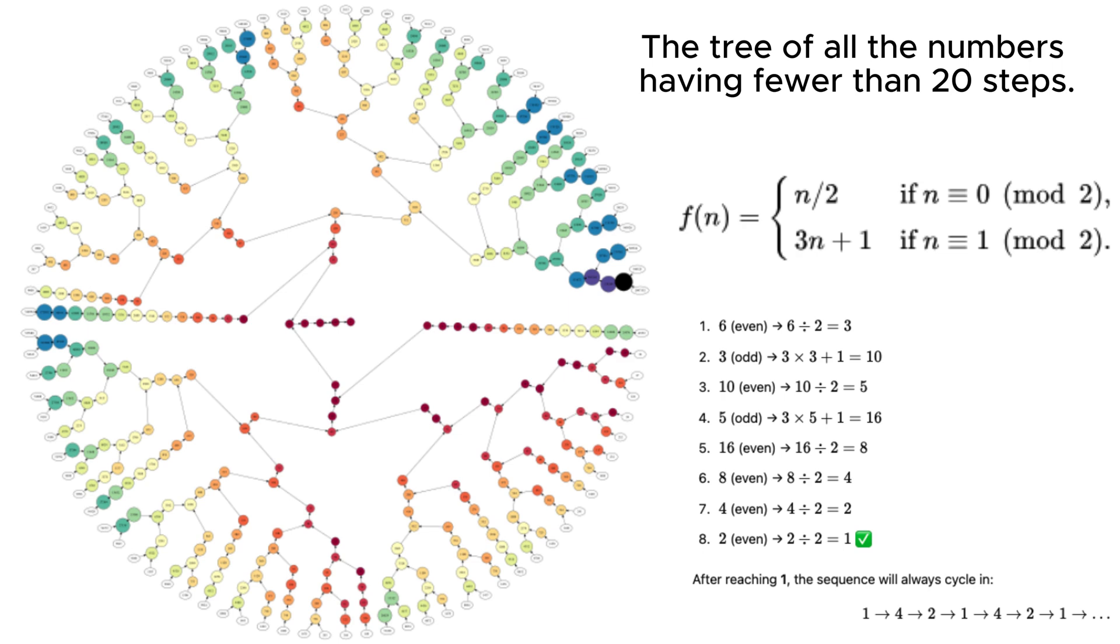Imagine a mathematical game, so simple a child could understand it, yet so complex it has stumped the world's greatest mathematicians for over 80 years. This is the Collatz conjecture, one of the most deceptively simple unsolved problems in mathematics.